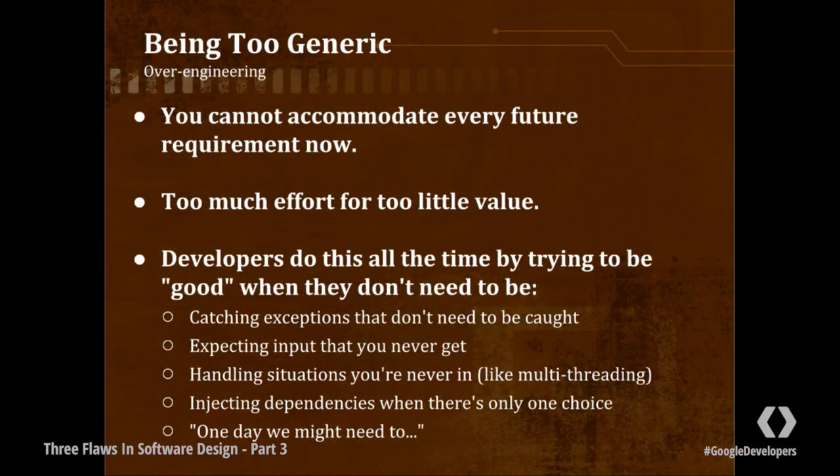So this is the third of our three flaws of software design, and this third one is being too generic. Often this is called overengineering. It's an attempt to accommodate every future requirement now, even though you can't actually know all the future requirements now. This is a flaw that senior developers frequently fall into. Junior developers often fall into our previous flaw, which is writing code that is too rigid or that doesn't have enough design. But senior developers have been bitten by change, and they want to try to accommodate every possible change now.